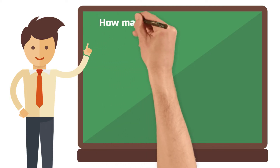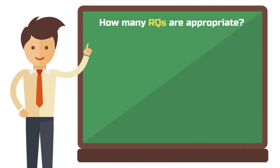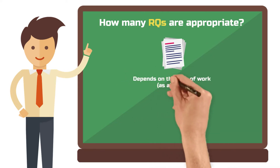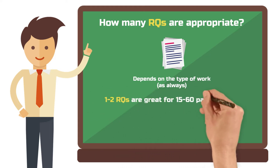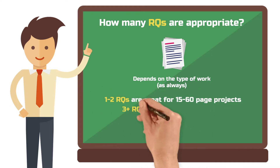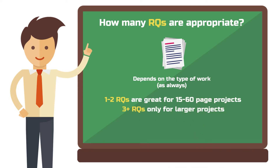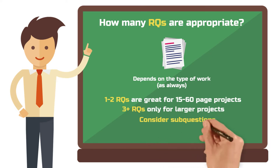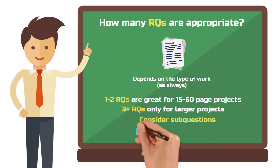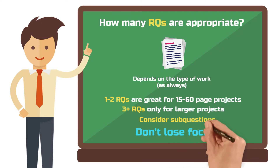For term papers, you should always formulate a research question. One question can usually be quite sufficient, but two research questions are also okay. For larger projects such as a master's thesis or even a doctoral dissertation, there may be more research questions. A regular thesis usually gets by with two solid research questions. Another way to split up your research questions are sub-questions, which is quite a proven way for longer papers. However, too many research questions will make you quickly lose your focus.